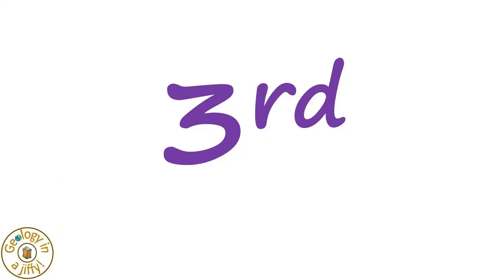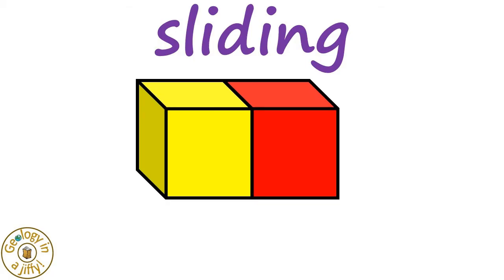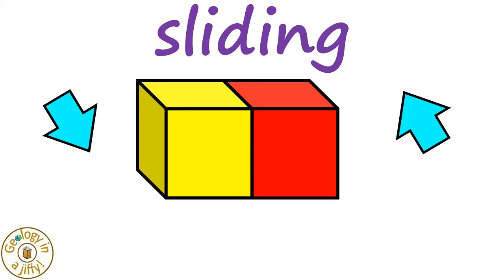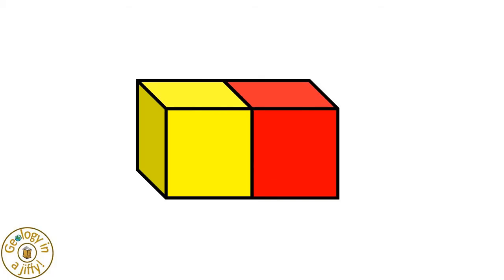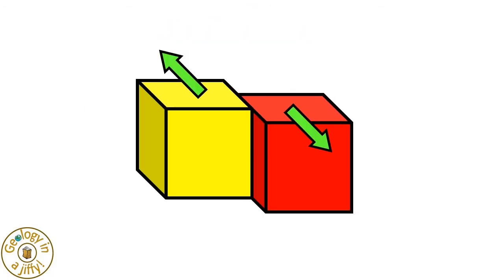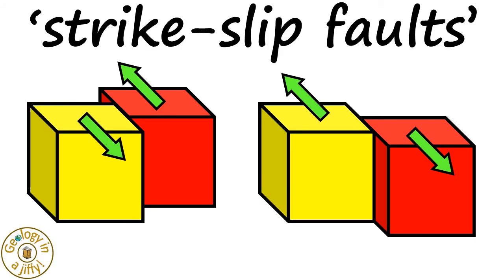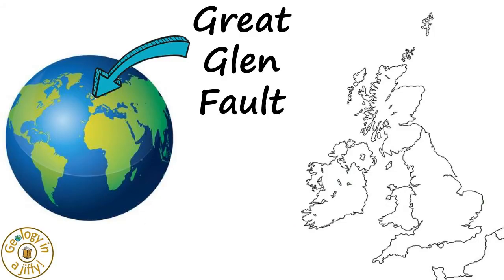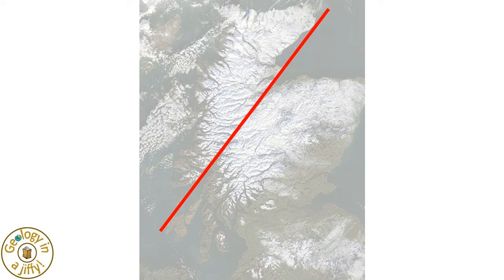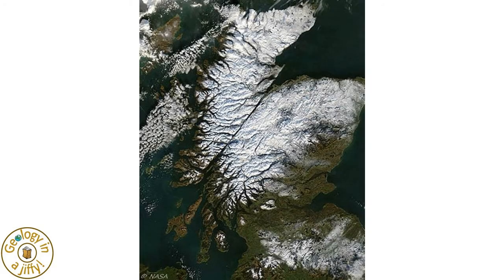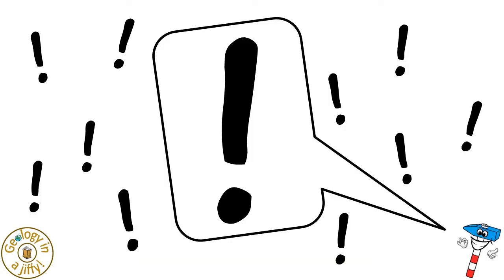The third type of fault happens when rocks slide past each other along the horizontal — the sliding either moving to the left in relation to where one stands, or alternatively the blocks could slide to the right, depending upon the forces in the area, forming strike-slip faults. A famous example is found in Scotland, where the most prominent fault in Great Britain, the Great Glen fault, cuts diagonally across Scotland, the fault starting to move about 400 million years ago. That's amazing!